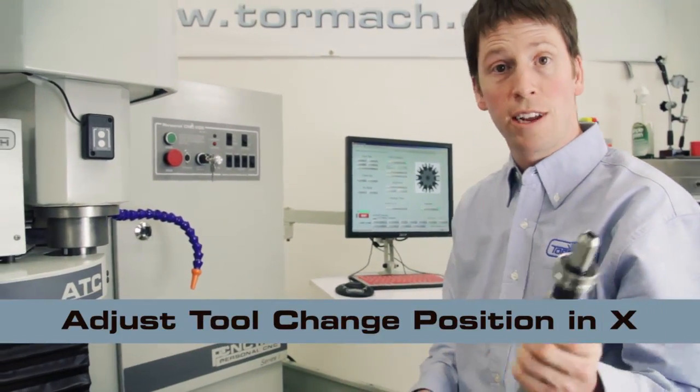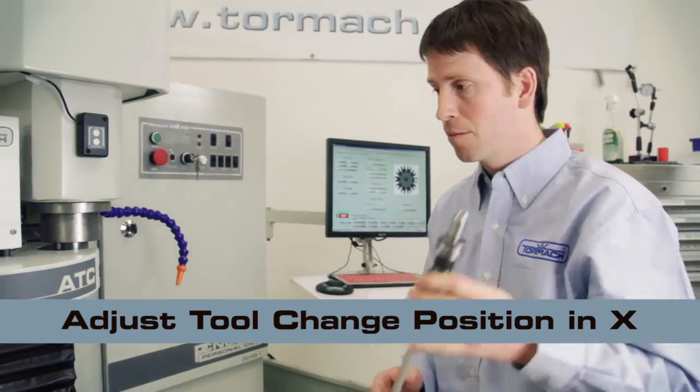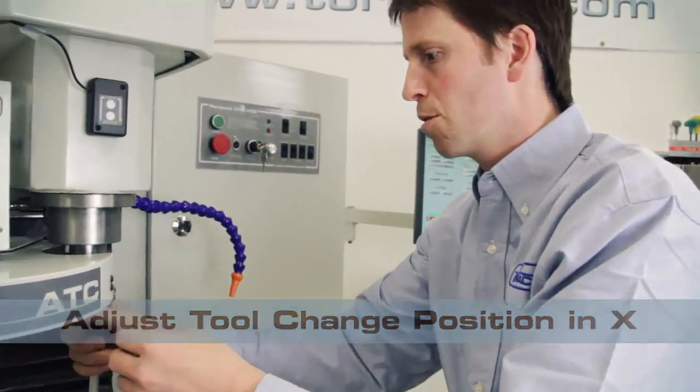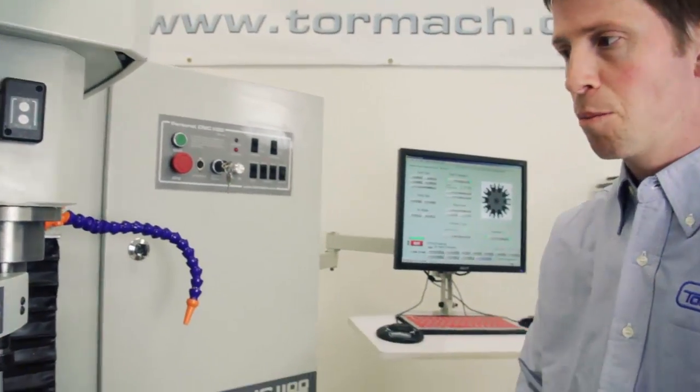All right, we're almost done with our alignment procedure. Two last steps. We've got to adjust the tool change position in X, that is, how far the carousel slides in before the spindle comes down and engages the tool. And then we're going to adjust the tool change position in Z, that is, how far the head comes down over the tool shank. So to adjust the X position, take any old tool holder. It doesn't have to be your dowel tool holder. I just happen to have this here. We're going to put it into the fork.